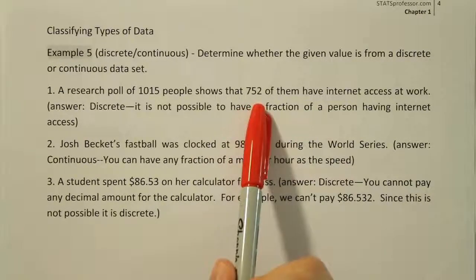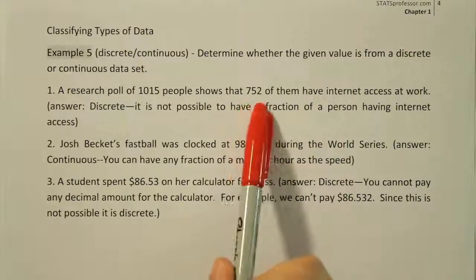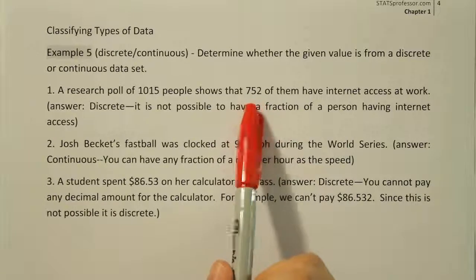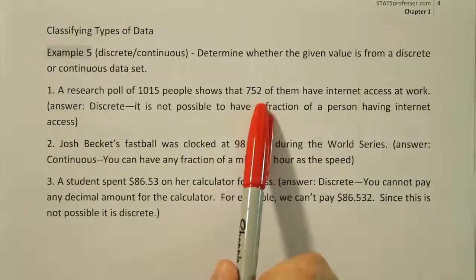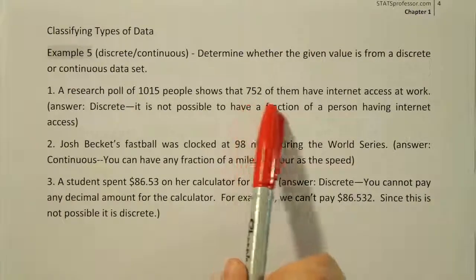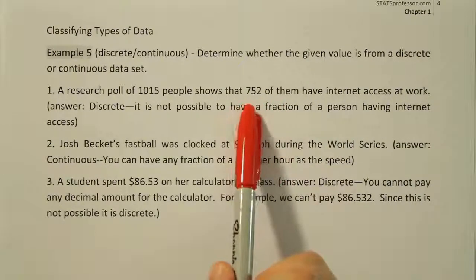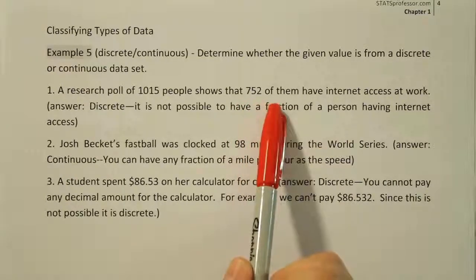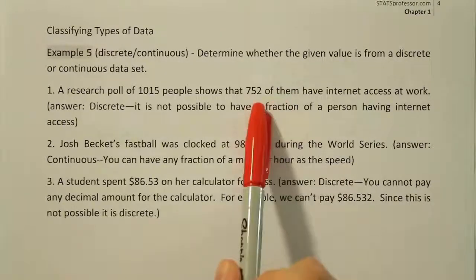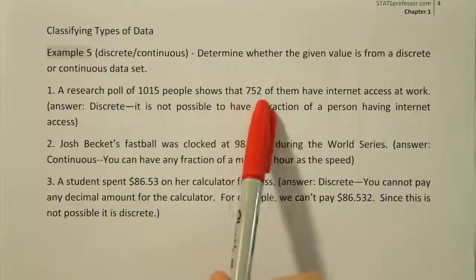The other thing to think about is whether it's possible to have any value between any two possible values. So 752 is okay, and 753 is okay. But you can't say there are 752.89 people who have internet access — that doesn't make sense. That's also an indication it's discrete, because there are gaps between numbers that you can't achieve.